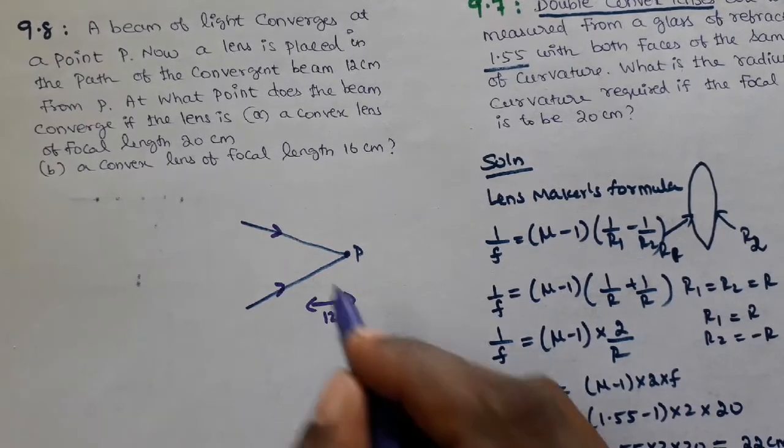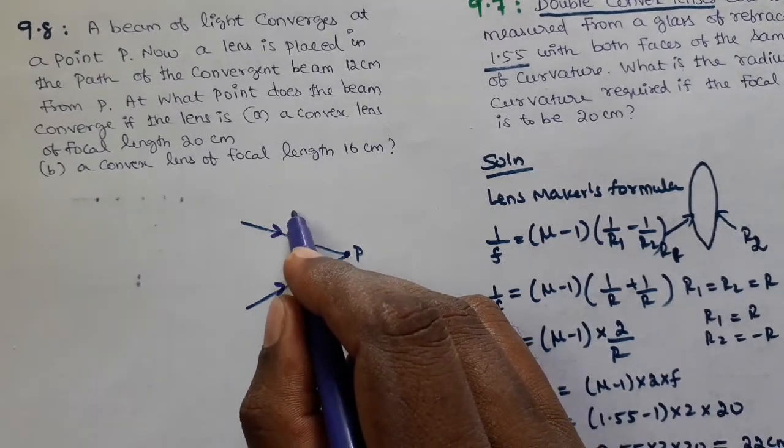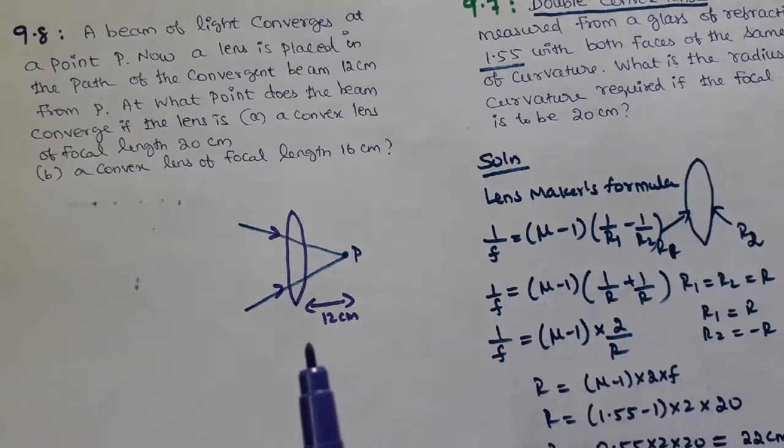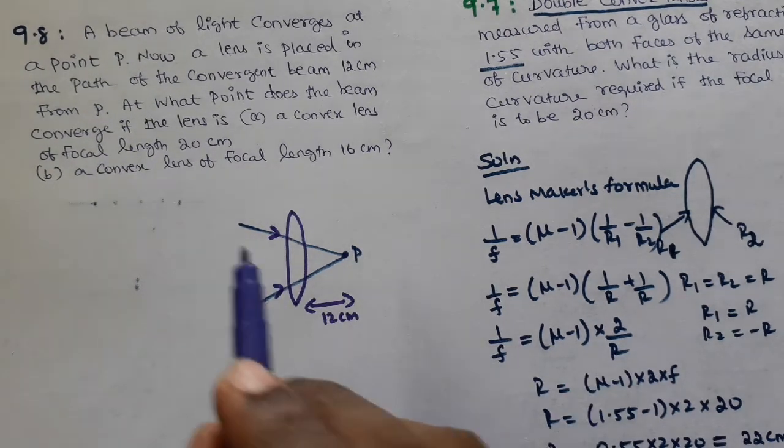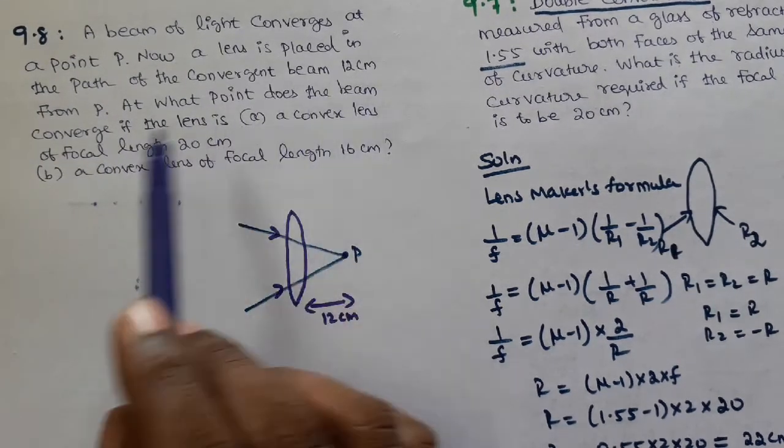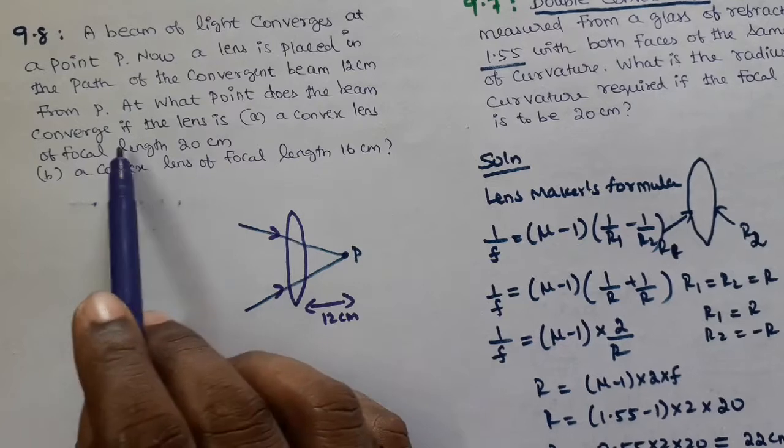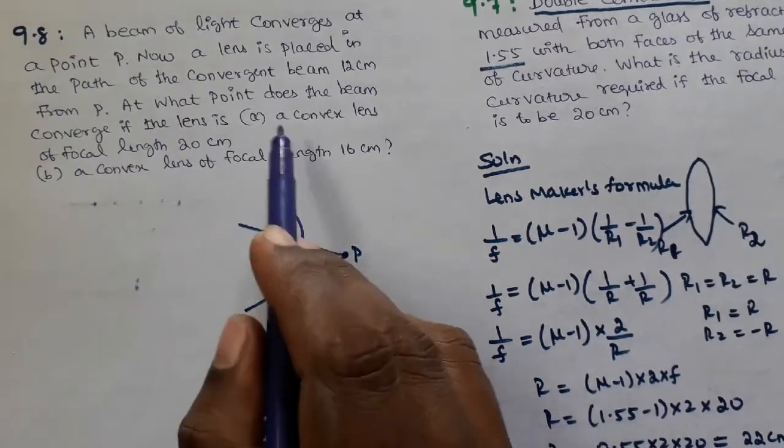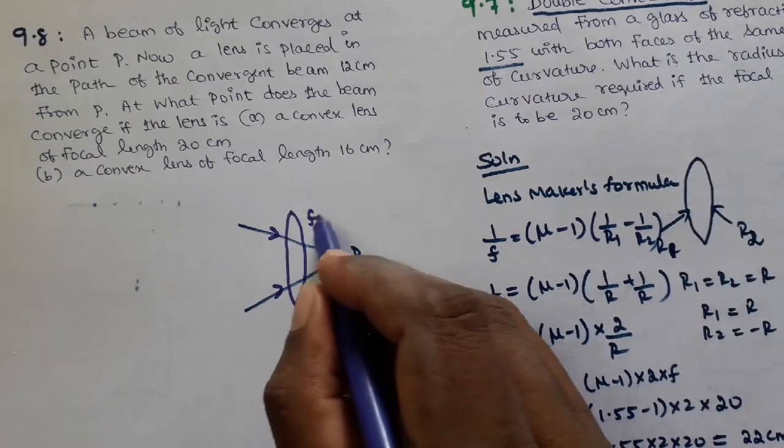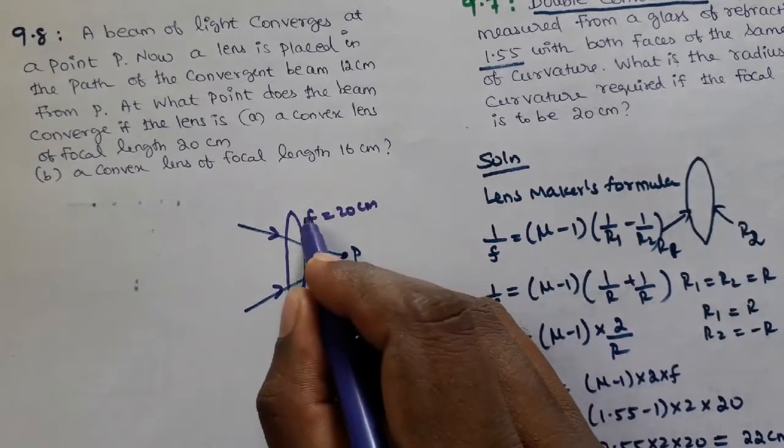First case: The lens is a convex lens with focal length of 20 cm. Where does the beam converge with this convex lens?